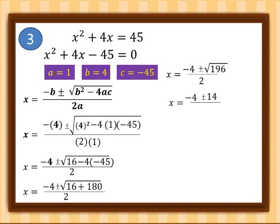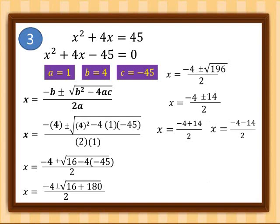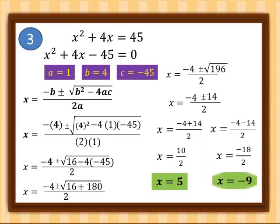Separating plus and minus: x = (−4 + 14)/2 = 10/2 = 5, and x = (−4 − 14)/2 = −18/2 = −9. So the roots of our quadratic equation are 5 and −9.